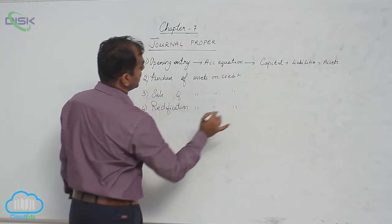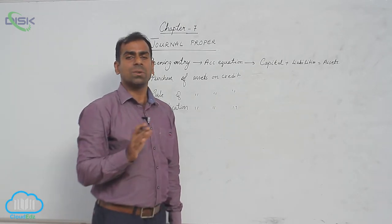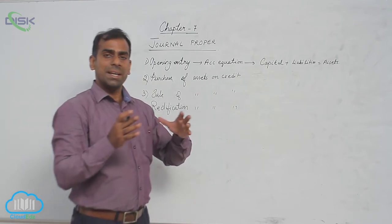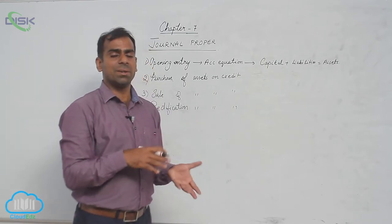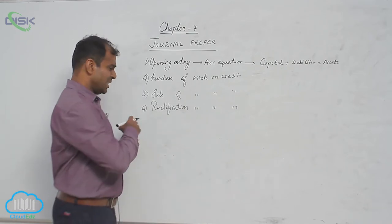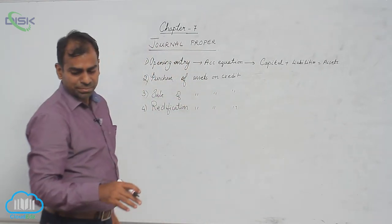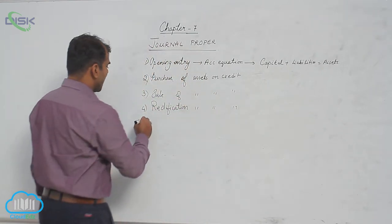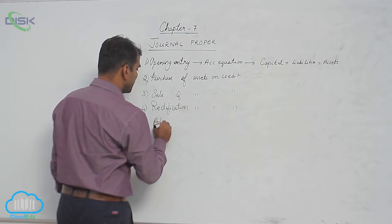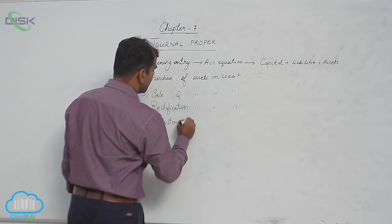Number four, we record rectification entries. A rectification entry is used when you have committed some error and have not yet closed your ledgers. We rectify the mistake by debiting or crediting the accounts involved in the mistake — that journal entry is called a rectification entry.